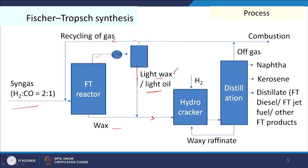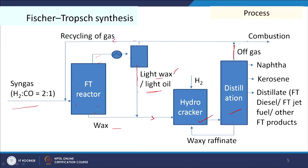The light wax and heavy wax are both hydrocracked. After hydrocracking, high molecular weight paraffins are converted to low molecular weight paraffins, and then distillation gives different fractions. We get off-gas that can be combusted or flared, then naphtha, kerosene, distillate, diesel, FT fuel, and other FT products. That is how we can get liquid fuels from natural gas.